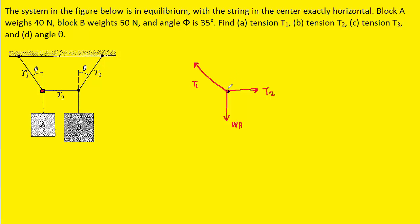For any forces that are pointing in both directions, what you want to do is break them into their x and y components. But before we do that, let's label the angle with the Greek letter phi that's shown in the diagram. Now we'll draw in the y and x components. We have a component for T1 that's pointing straight up, and then an x component pointing straight across to the left. The y component pointing up is adjacent to the angle phi, so we use the cosine function: T1 times the cosine of that angle. The x component is opposite to that angle, so we use the sine function: T1 times the sine of the angle.